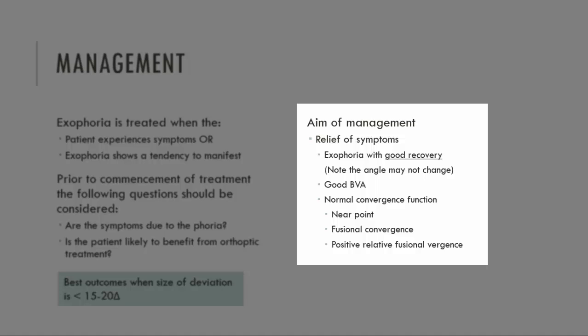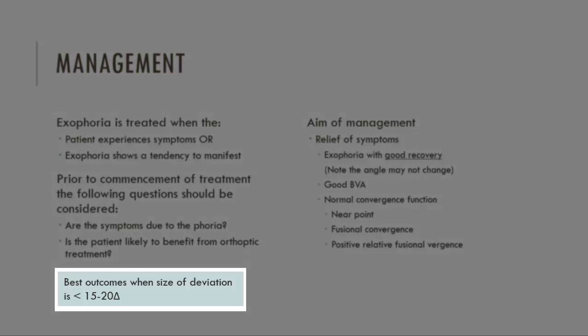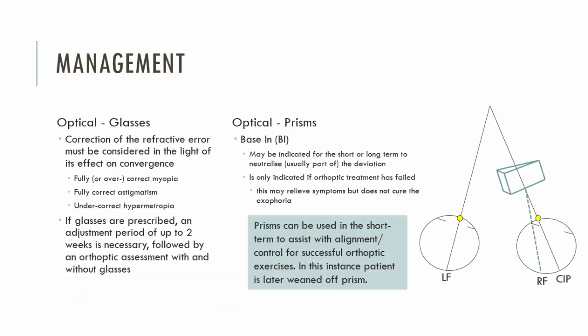It's worth noting that the best outcomes of conservative treatment for exophorias is when the deviation is relatively small — somewhere between 15 and 20 prism diopters. The higher the size of the deviation, the more difficulty you will have assisting your patient in controlling it. Conservative treatment means non-invasive treatment. Non-conservative treatment would be surgery or injecting Botox into a muscle. These two options — glasses and prisms — are conservative treatment methods.